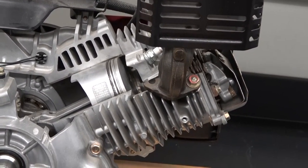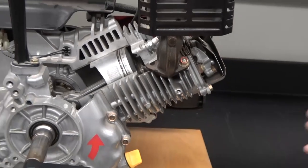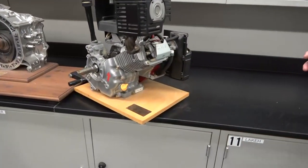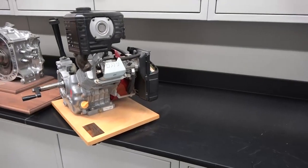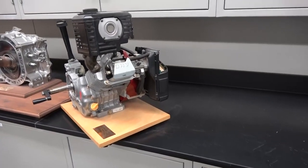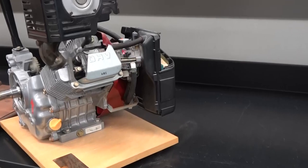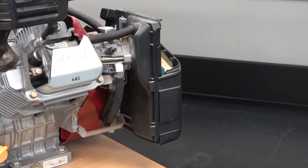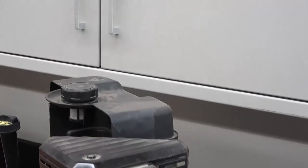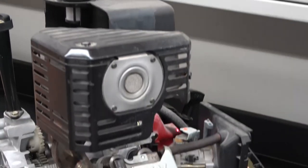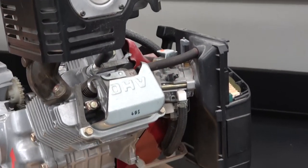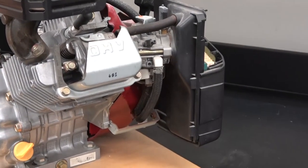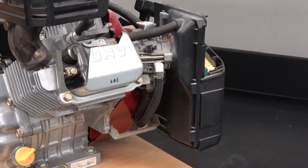If we come around onto the side over here, we get to see some of the auxiliary parts of the engine. Here is the air filter, the air intake, and the carburetor right in here. This big tank is the fuel tank, and here's our fuel line connecting into the carburetor. All that is going to flow right down here and into the engine.